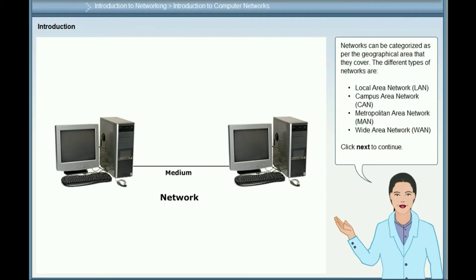Networks can be categorized as per the geographical area that they cover. The different types of networks are Local Area Network (LAN), Campus Area Network (CAN), Metropolitan Area Network (MAN), and Wide Area Network (WAN).